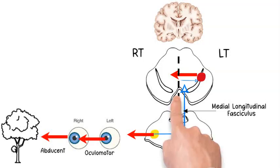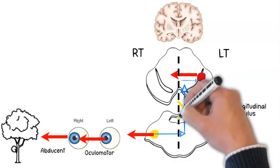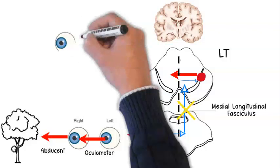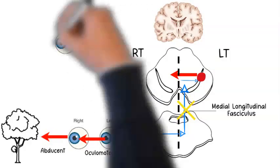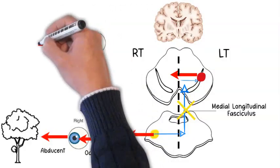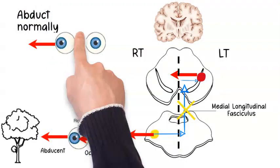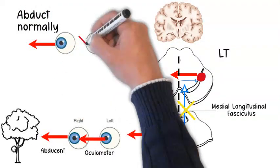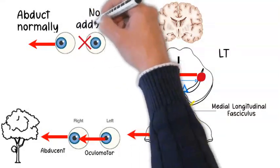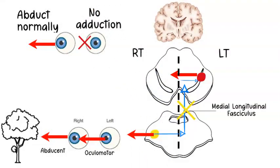Now imagine what happens when there is a lesion at this medial longitudinal fasciculus. The abducent nucleus will abduct normally with nystagmus towards the target, while the medial rectus nucleus will not move towards the target, producing what is called internuclear ophthalmoplegia.